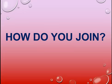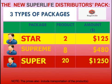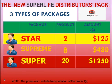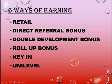How do you join and become a member of Super Life? We have three ways of joining, distributed into packages. The first is a Star package where you buy two products of STC 30 at 125 USD. You can also join as a Supreme where you buy eight products of STC 30 at 480 USD. The company gives you seven ways of earning: retail, direct referral bonus, double development bonus, rack bonus, key-in bonus, and unilever bonus.